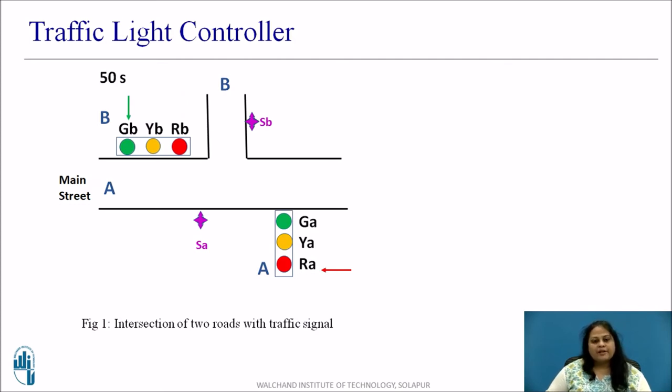The light on B remains green at least for 50 seconds. At the end of 50 seconds it checks the sensor outputs and if SB equal to 1 and SA equal to 0, it remains the same state for 10 more seconds. And at the end of 10 seconds it once again checks the sensor outputs.